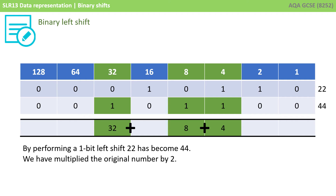Now, you don't just have to shift by one bit — you could shift by two bits or more. The principle is the same. The bits are going to disappear off the left-hand side, they're going to get padded on the right-hand side, and any in the middle are going to be shifted over that number of places.